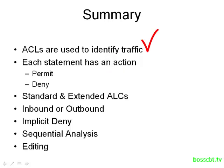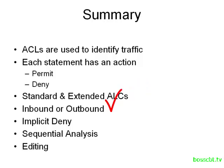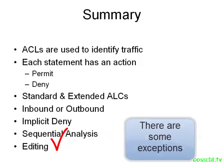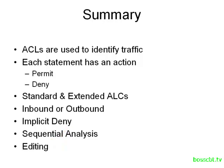To summarize: Access Lists are used to identify traffic, and when a match is made, there's an action associated — either permit the traffic or deny the traffic. There are two types: the simple Standard Access List and the more complex Extended Access List, both of which we'll cover in coming tutorials. Access Lists can be applied to inbound or outbound packets, and at the end of each Access List is an implicit deny, so if no matches are made the packet is denied by default. Packets are compared sequentially to each statement, new entries go to the bottom, and you can only delete the entire Access List, not a single statement.